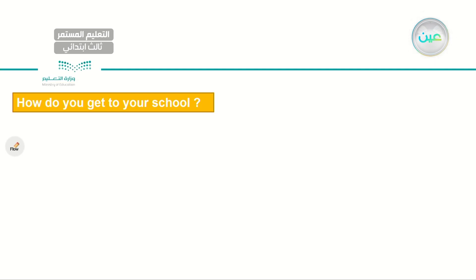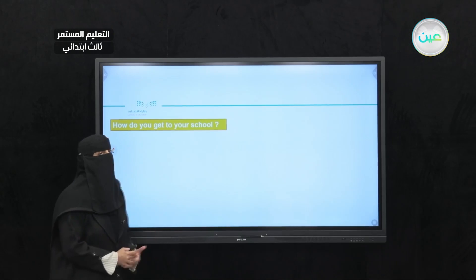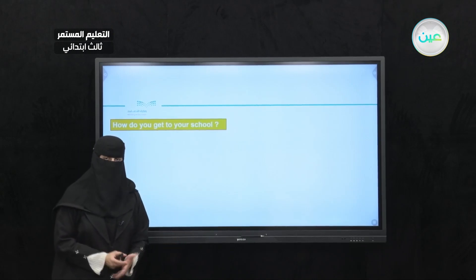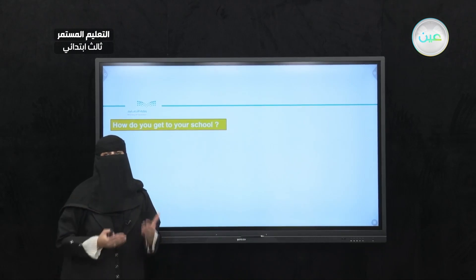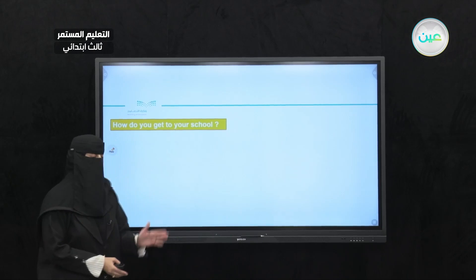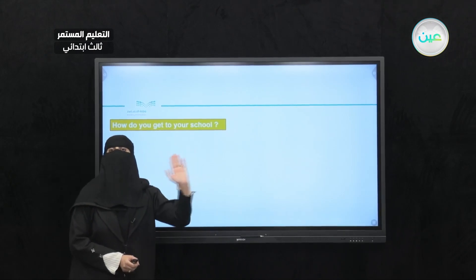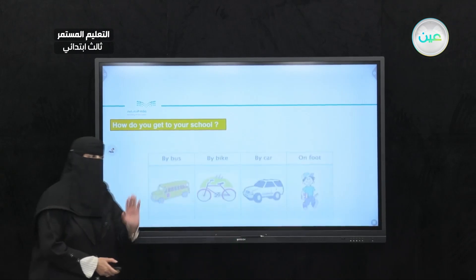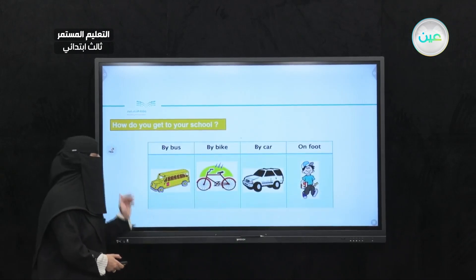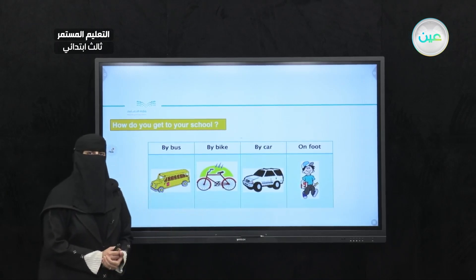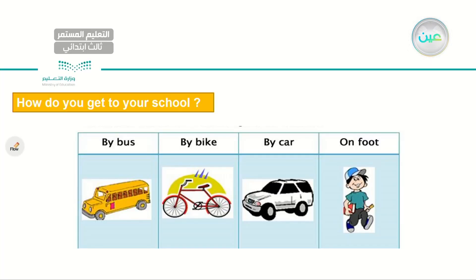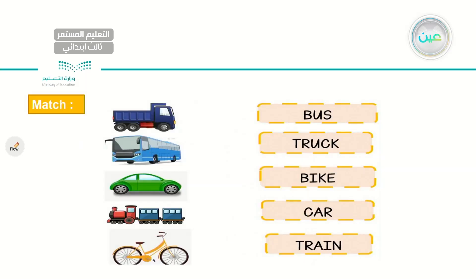Now let me ask you this question: how do you get to your school? Probably not all people go to school using the exact same transportation. How do you get to your school, or your work, or the hospital? You will probably say: by bus, by bike, by car, or on foot. So, how do you get to your school? We might say by bus, by bike, by car, or on foot.